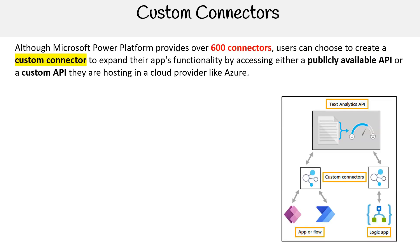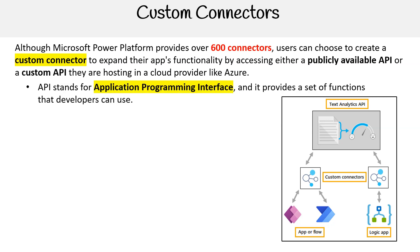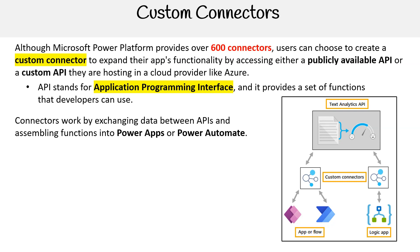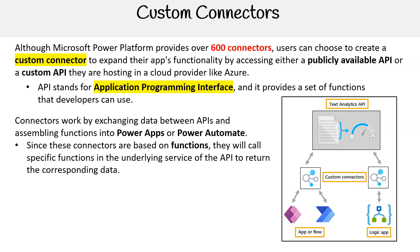Although Microsoft Power Platform provides over 600 connectors, users can choose to create a custom connector to expand their app's functionality by accessing either a publicly available API or a custom API they are hosting in a cloud provider like Azure. API stands for Application Programming Interface, and it provides a set of functions that developers can use. Connectors work by exchanging data between APIs and assembling functions into Power Apps or Power Automate. Since these connectors are based on functions, they will call specific functions in the underlying service of the API to return the corresponding data.